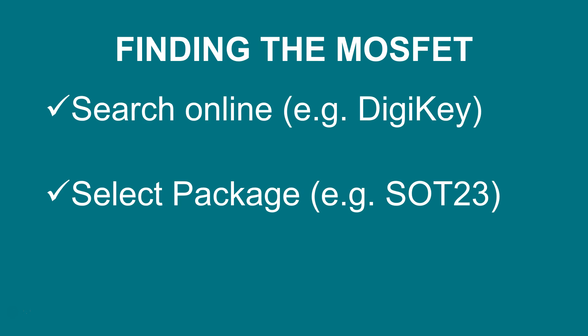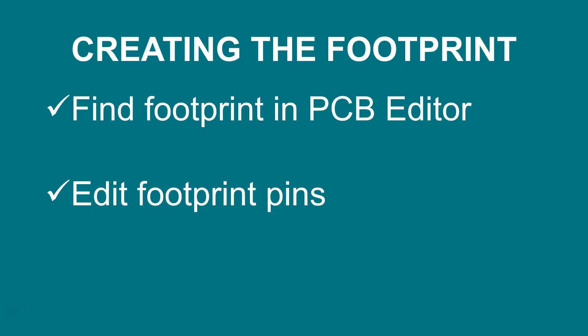When you want to find the MOSFET, go to your favorite website — maybe Arrow, DigiKey, or whatever. Select the specifications you need for that MOSFET first, and then choose the package type. What's really important is that you choose the specifications first to meet your need, then choose the package type.